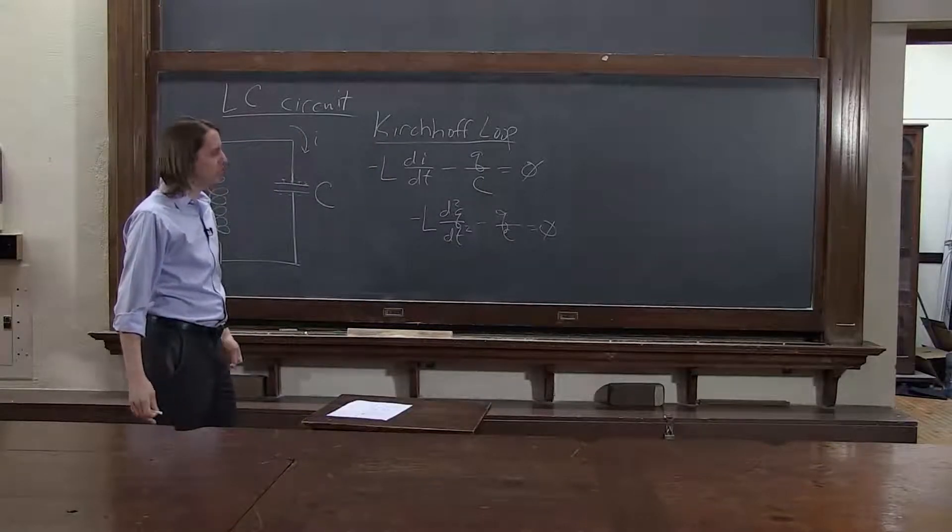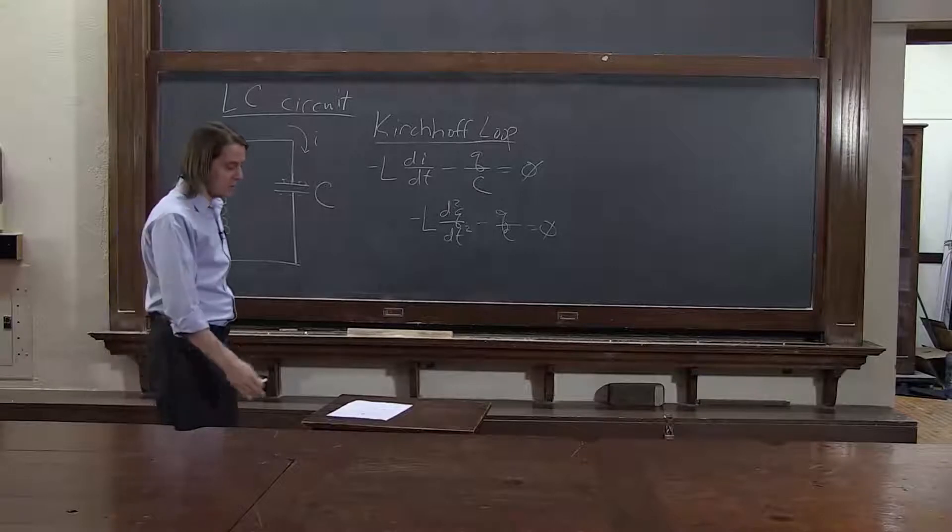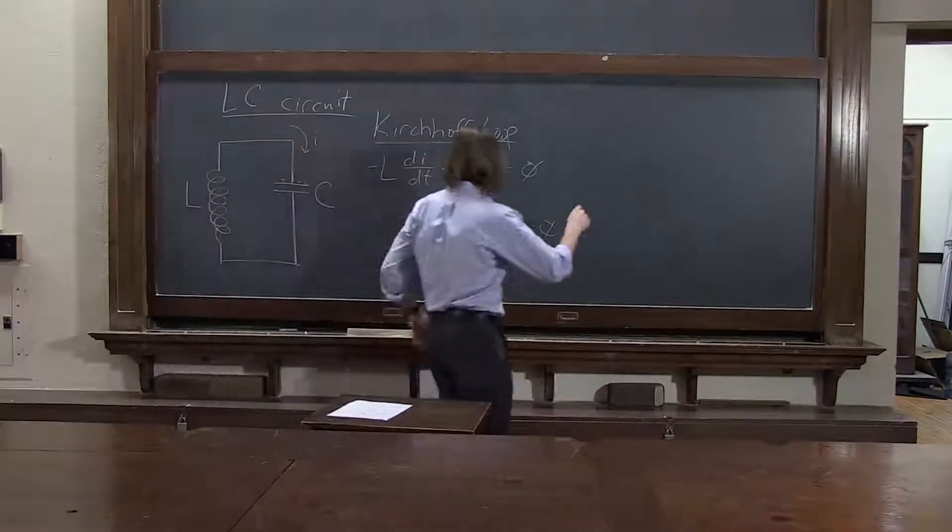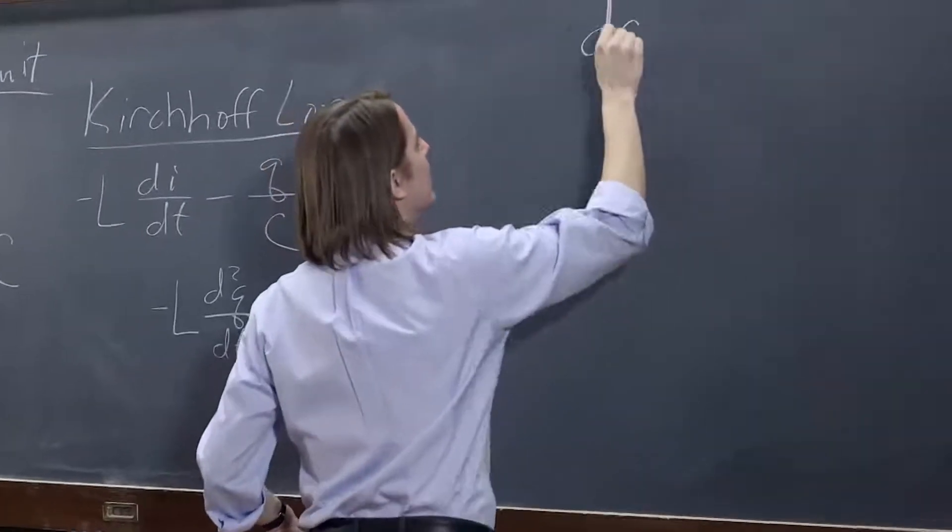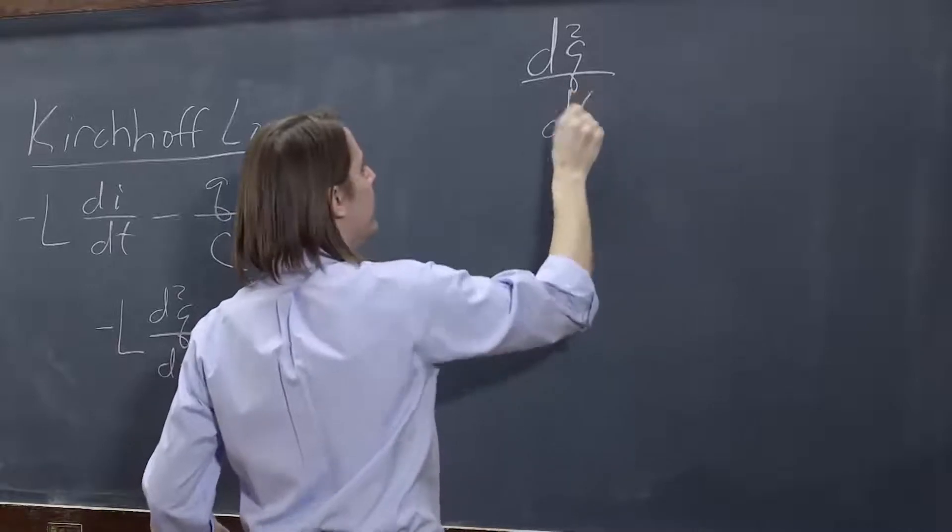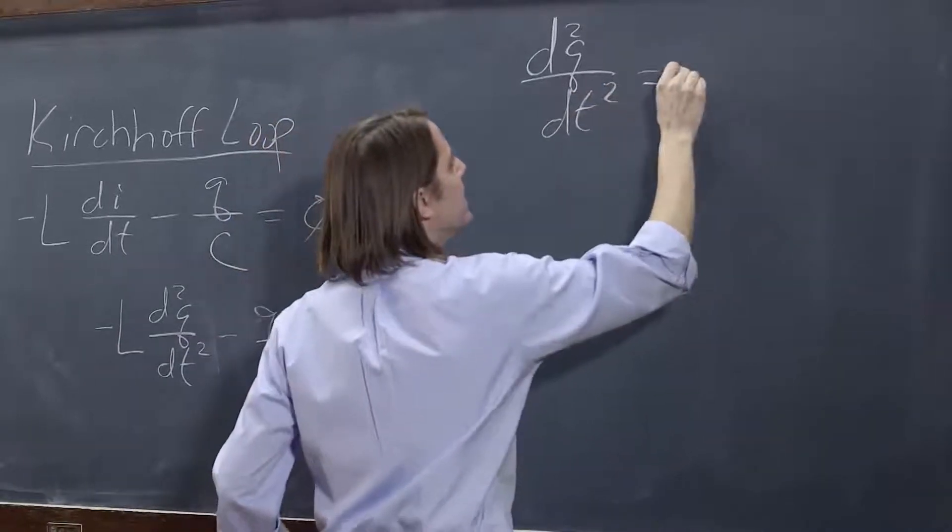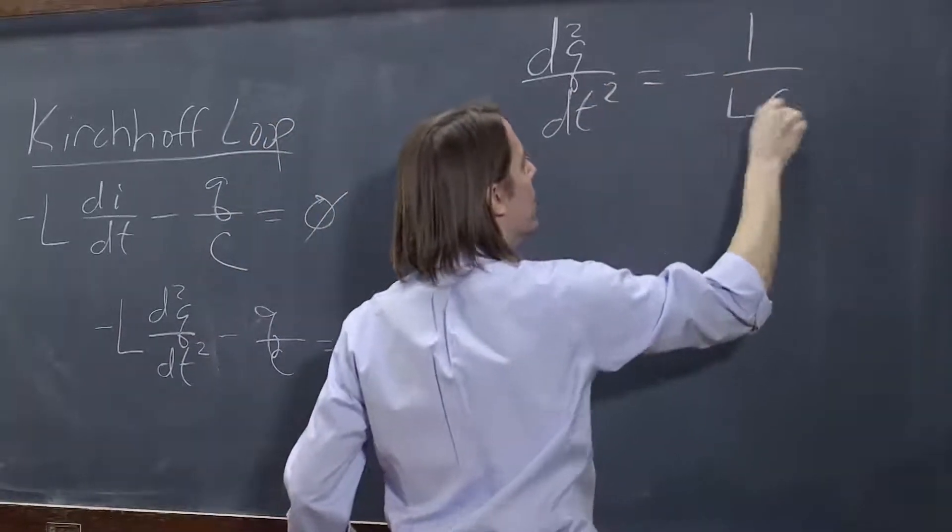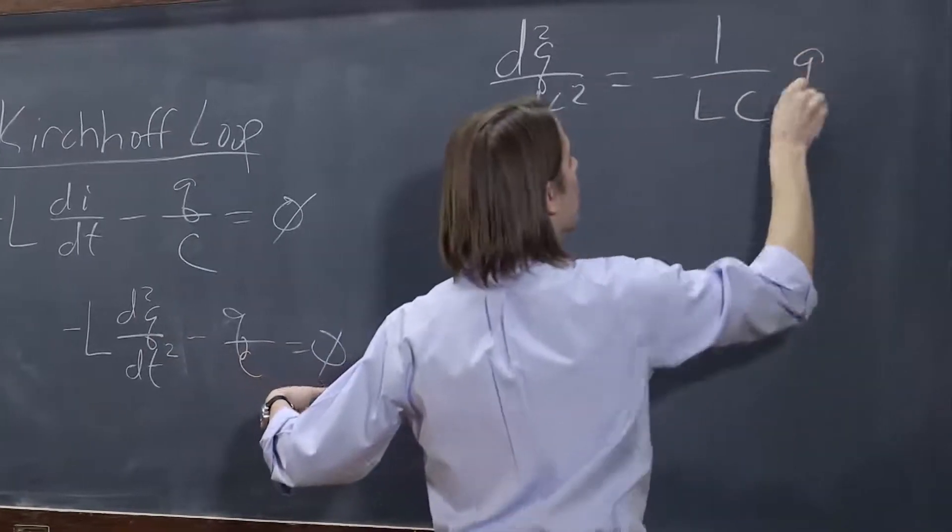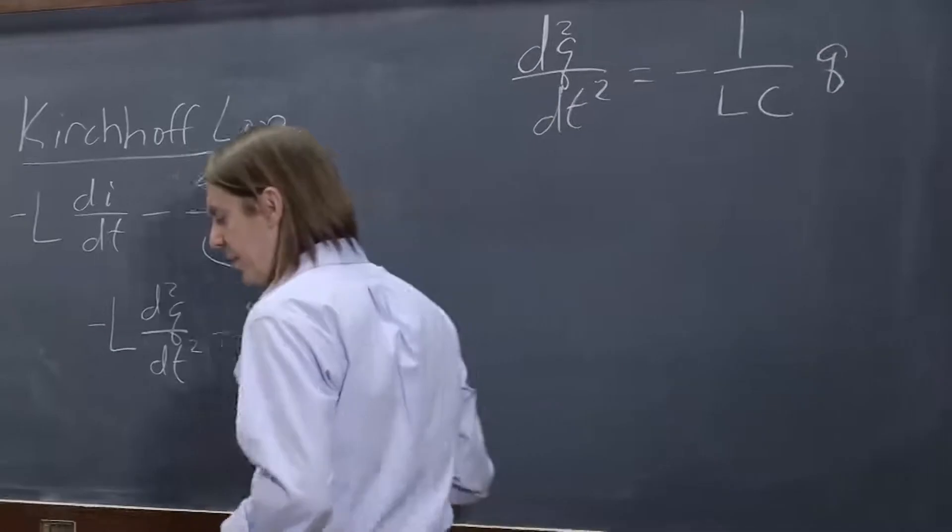So now we just have to pull out our bag of differential equation tricks. Let's write it a little nicer and see if something comes to us. We could isolate. Usually in differential equations, you isolate the high derivative of the function d2q dt2 equals minus one over LC times q. That's where we are.